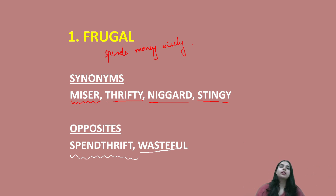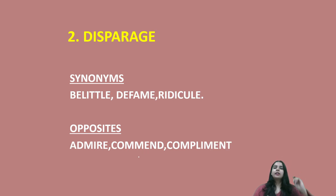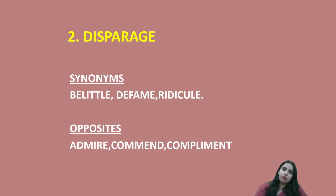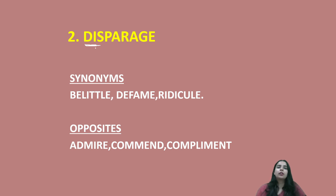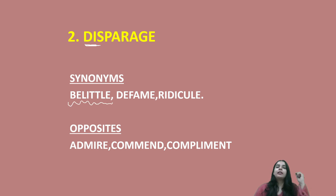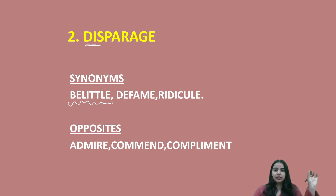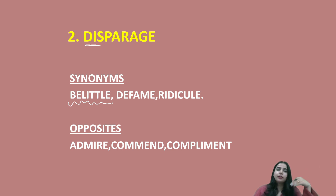If you can think of more words, you can write them down in the comment section below and then we can discuss if they are right or wrong. The next word is disparage. Disparage ka matlab hota hai kisi ko belittle karna — to belittle, degrade, or humiliate someone. That is called disparaging. Synonyms include belittle — belittle ka matlab hota hai kisi ko chhota mehsoos karana, to make someone feel very small — defame, and ridicule, which also means to mock someone.